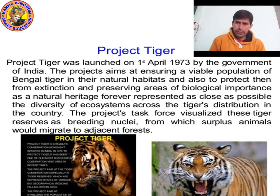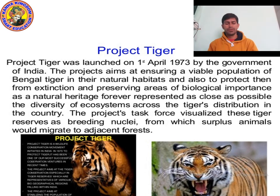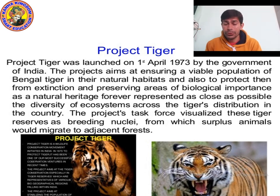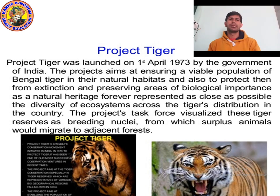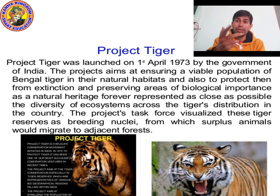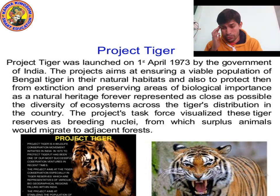Hello class, today we are going to finish Chapter 7: Conservation of Plants and Animals. We will study some new topics like Project Tiger, the Red Data Book, and endangered animals. Last time we studied about national parks and more topics, so let's revise them in two minutes.